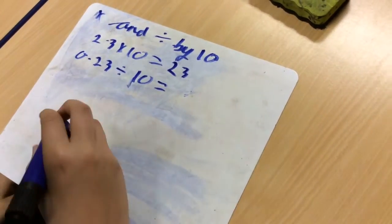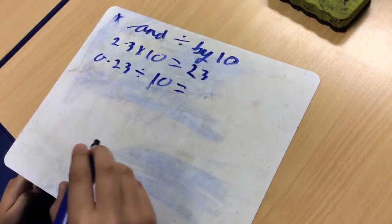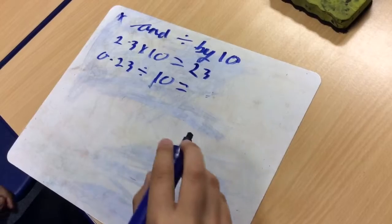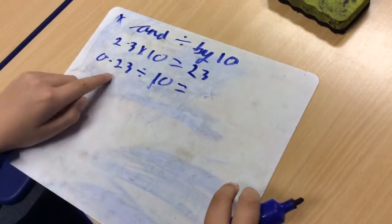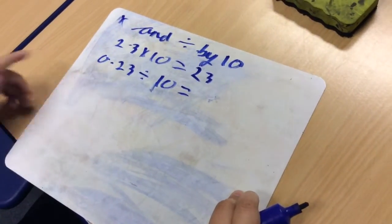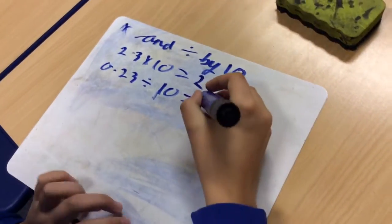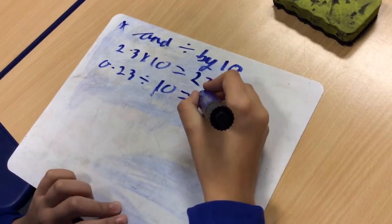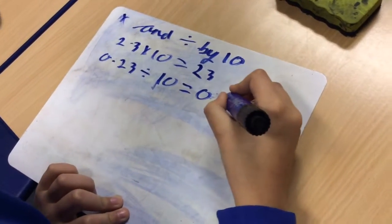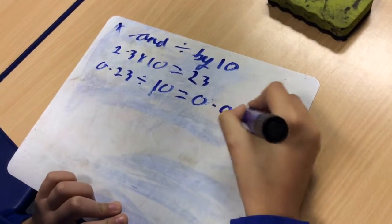And if you're dividing a decimal number you move it down. So that's the tenths and that's the hundredths. You move it down to the thousandths, so it's 0.023.